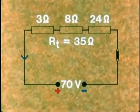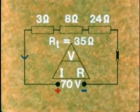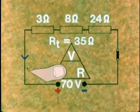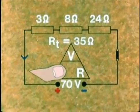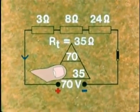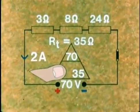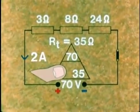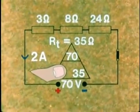This combined resistance can now be used with Ohm's law to calculate the current in the circuit. 70 divided by 35 equals 2 amps. And this same current of 2 amps flows through each of the resistances.